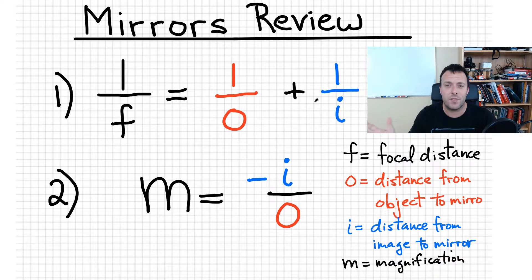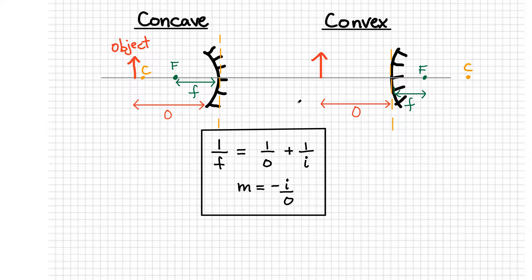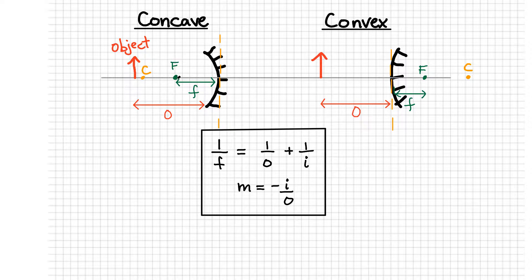I'll show you what the difference is and how you use these equations in each case. Here are the two cases I'm considering: a concave mirror and a convex mirror. For the concave mirror, we've got a curved mirror where the shiny surface is on the inside. It is characterized with a focal point F, a radius of curvature C, and the distance from that focal point to the mirror, we call that lowercase f.